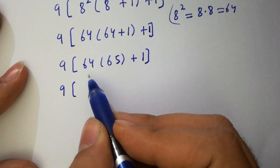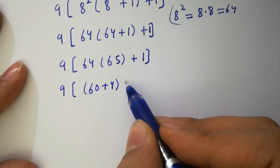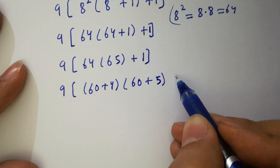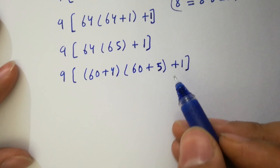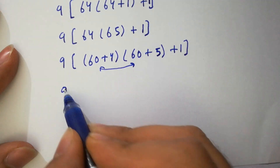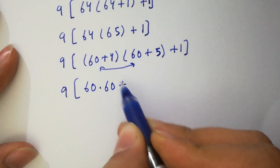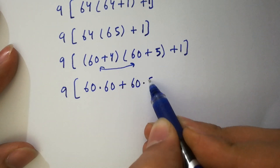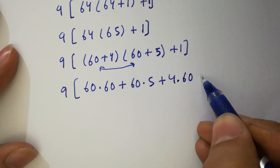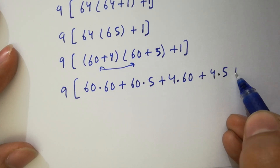In the next step, 9 times 64 is the same as (60 plus 4), and 65 is the same as (60 plus 5), plus 1 as it is. We can multiply both: 9 as it is, and we have 60 times 60, plus 60 times 5, plus 4 times 60, plus 4 times 5, plus 1 as it is.